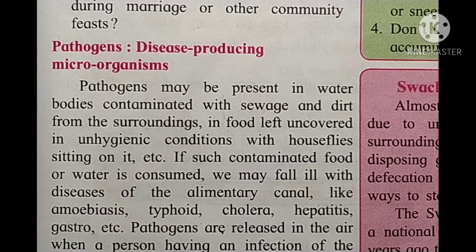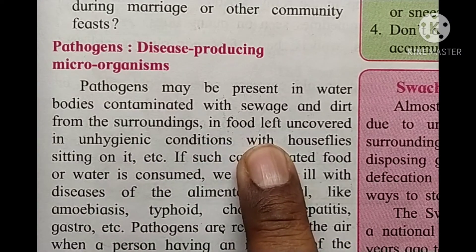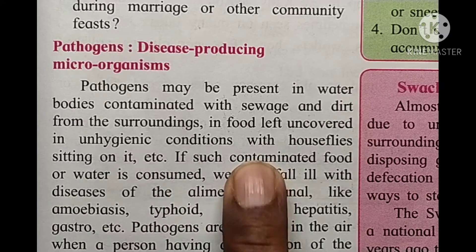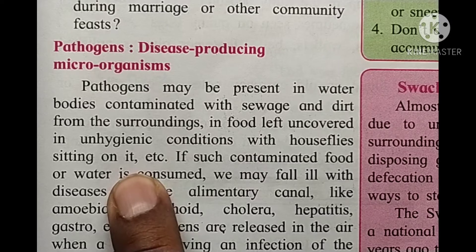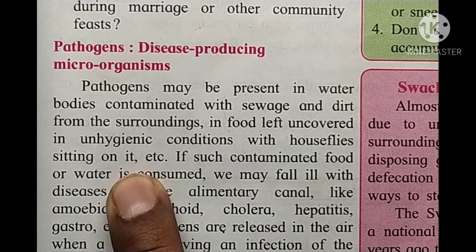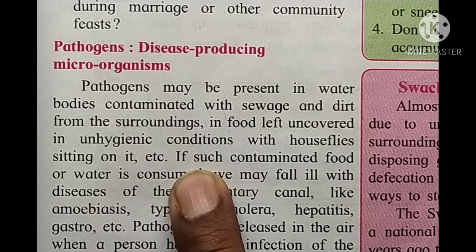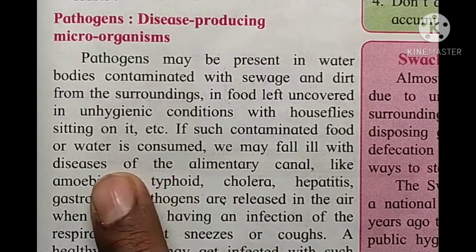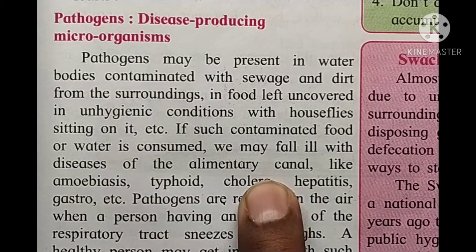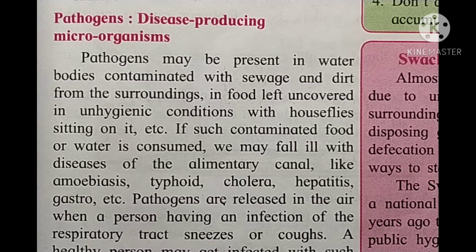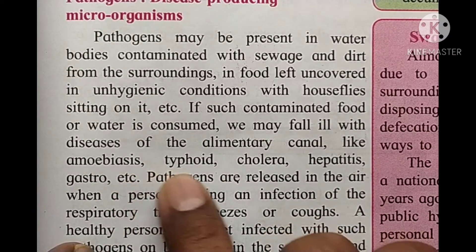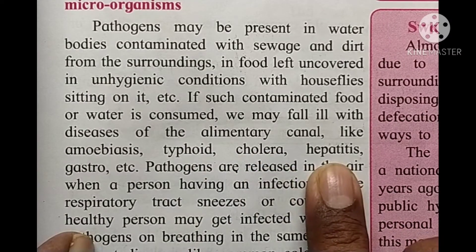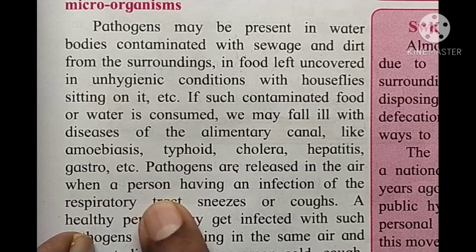Water bodies contaminated with sewage and dirt from the surrounding area, and food left uncovered in unhygienic conditions with house flies sitting on it, can spread disease. If such contaminated food or water is consumed, we may fall ill with diseases of the alimentary canal such as amoebic dysentery, typhoid, cholera, and hepatitis.